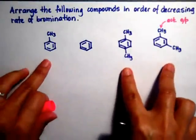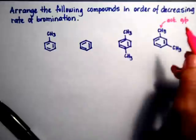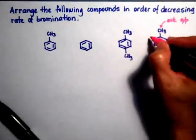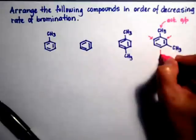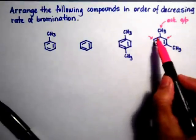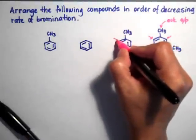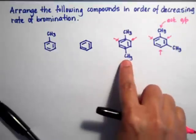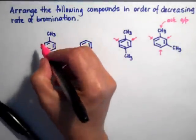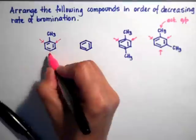We're going to go through the compounds and see which positions are activated. This methyl right here is an ortho-para-activator, so it's activating the ortho- and the para-positions. I'm going to do that with the methyl at the top of this one too. The para-position is already taken, and this is toluene, which is also ortho-para-activated.